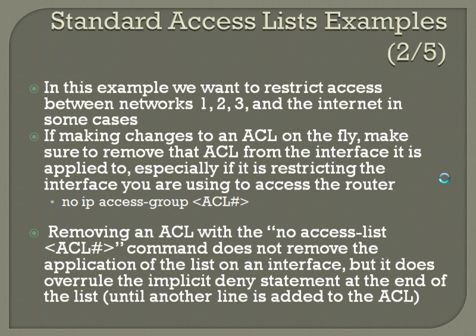If making changes to an ACL on the fly, make sure to remove that ACL from the interface it's applied to — especially if it's restricting the interface you're using to access the router. Apply the command: no ip access-group, the ACL number, while in interface configuration mode. The reason is that making changes while the ACL is active could kick you out of the router. Removing an ACL with the no access-list command does not remove the application on an interface, but it overrules the implicit deny at the end of the list until another line is added.